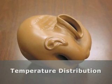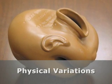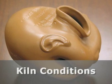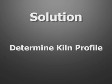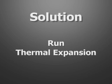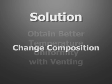This is a good example of a product that warped during the firing process. The causes could be large temperature distributions within the kiln, variation in the size, shape, and geometry of the product, kiln conditions or kiln performance, or the product having a very short maturing range. Solutions include determining the kiln profile to identify hot spots, drafts, or uniformity issues. We can run thermal expansion on the product to determine maturing information, obtain better temperature uniformity within the firing, and possibly change the composition of the product to extend its maturing range.